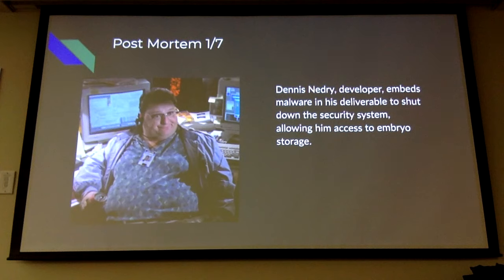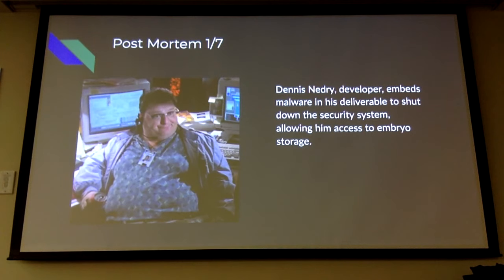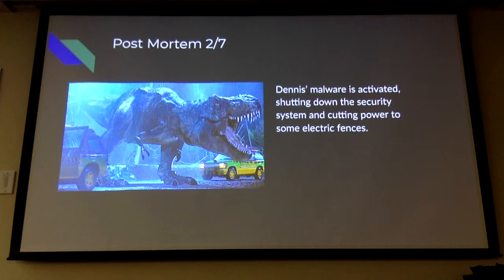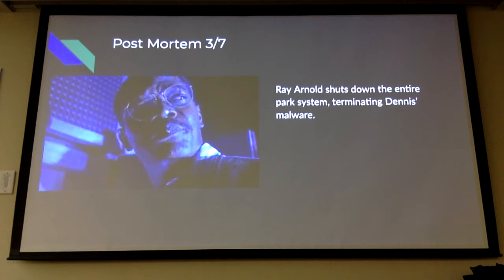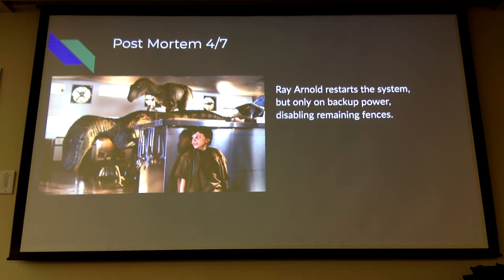So, what happened in Jurassic Park: Dennis Nedry was the developer they hired. He put malware in what he was hired to build that shut down the security systems so he could go get the embryos, take them, run off, sell them, make billions of dollars — but he died. The malware was activated, the security system shut down so he could do what he wanted, but it also cut power to some electric fences, which let the T-Rex out, and that was bad. Scrambling to fix it, Ray Arnold shut down the entire park system, which terminated the malware, but then they had no power.